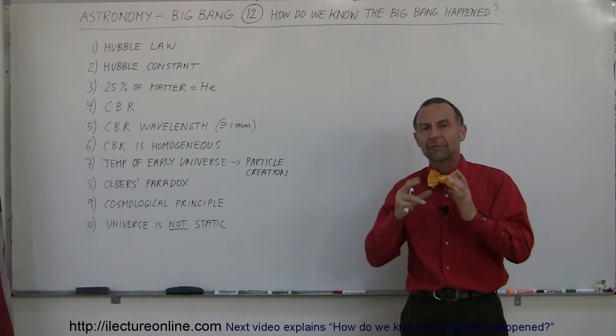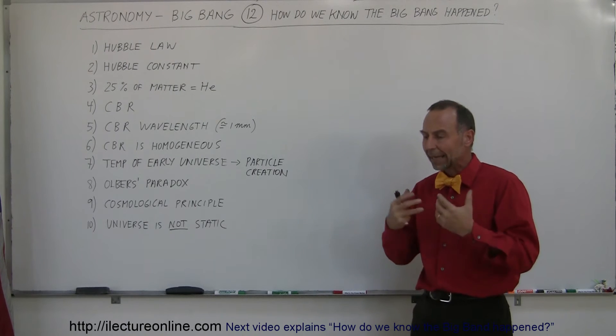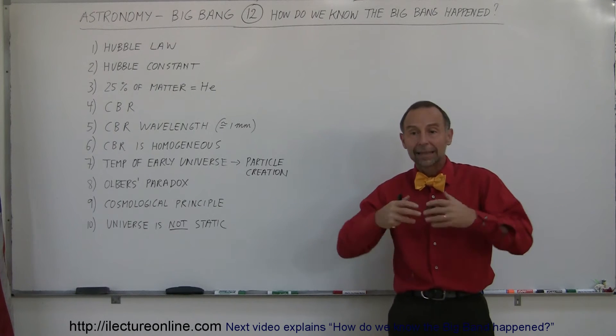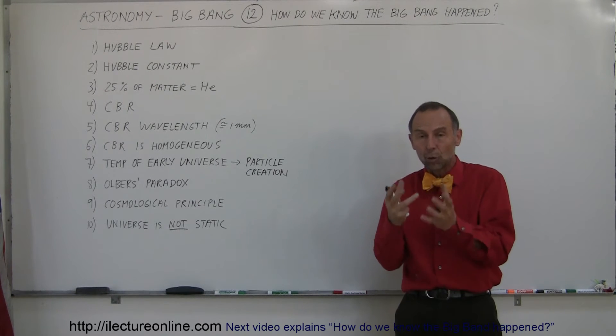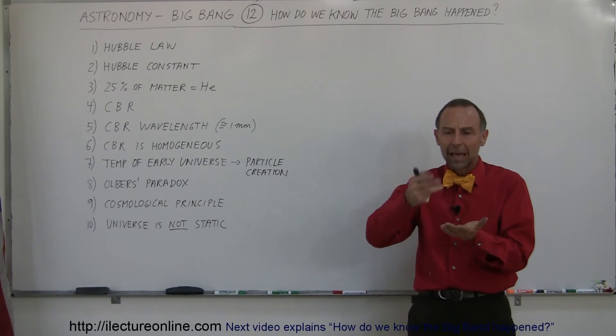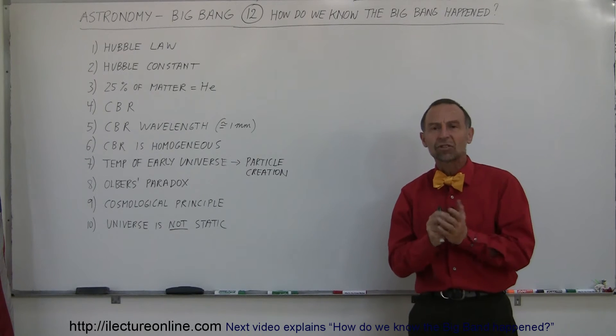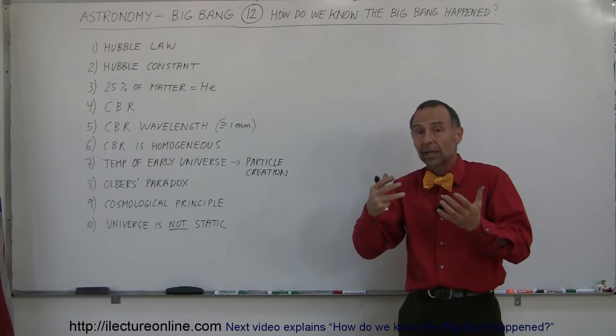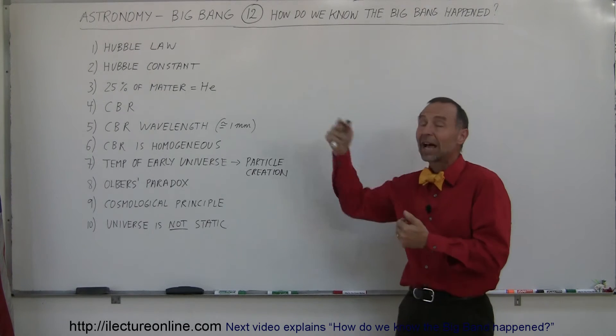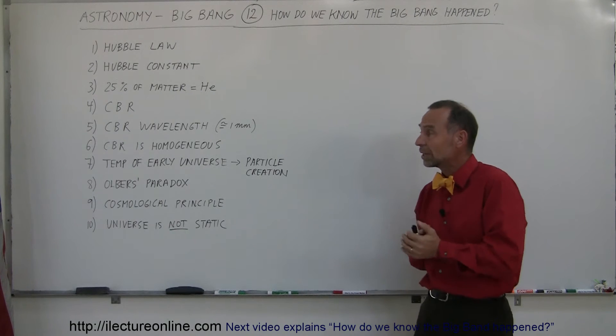And that temperature would have been so hot, more than 10 million degrees Kelvin, that the whole universe would be like the core of a star, fast and furiously converting hydrogen to helium. And we calculated out the speed at which the universe would cool down, the temperatures that would exist. And from our calculations, we determined that about 25% of all the hydrogen should have converted to helium, and that's about exactly what we see in the universe. 25% of all the matter in the universe is turned into helium.